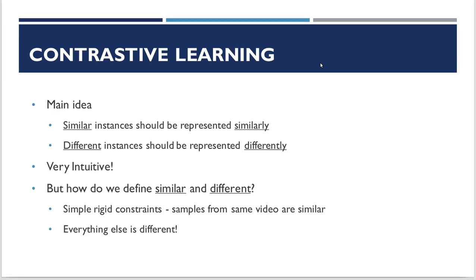So let's go over contrastive learning. The main idea is pretty intuitive: similar instances should be represented similarly, while different instances should be represented in a different manner. But how do we define similar and different? We use simple rigid constraints — samples from the same video are similar and everything else is different.